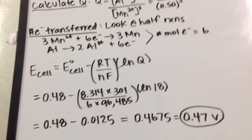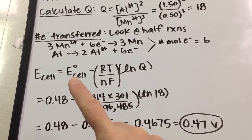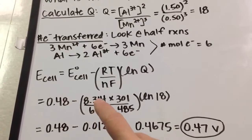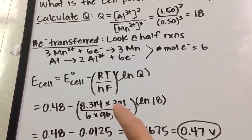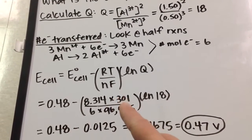So I plug in my values. 0.48 is my standard cell potential, 8.314 is a constant, T—why isn't it 28? Well, temperature must be in Kelvin,